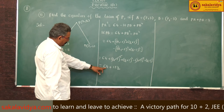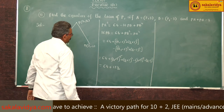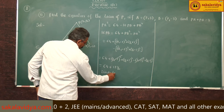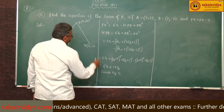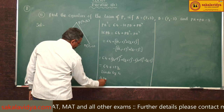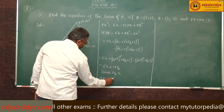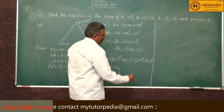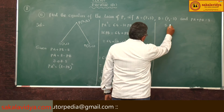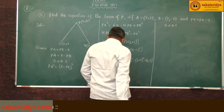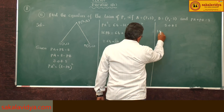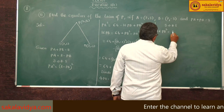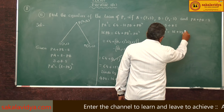So 16·PB equals 64 plus 12·y1, divided by 4 gives 4·PB equals 16 plus 3·y1. Squaring on both sides: 16·PB² equals (16 + 3·y1)².